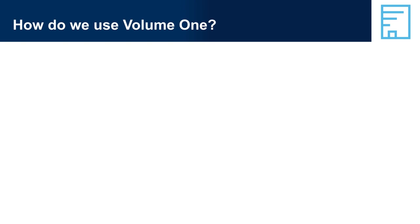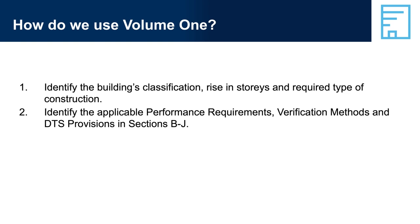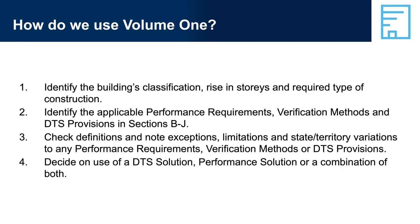How do we use Volume 1? Step 1: Identify the building's classification, rise in stories, and required type of construction. Step 2: Identify the applicable performance requirements, verification methods and DTS provisions in Sections B to J. Step 3: Check definitions and note exceptions, limitations, and state/territory variations to any performance requirements, verification methods or DTS provisions. Step 4: Decide on use of a DTS solution, performance solution, or a combination of both.